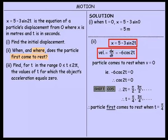It also asks where does the particle first come to rest. The where refers to the displacement. So when t equals π on 4, x equals 5 minus 3 multiplied by the sine of 2 times π on 4, and that simplifies to be 2. So x equals 2 metres from the origin.